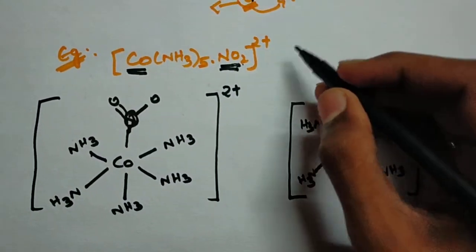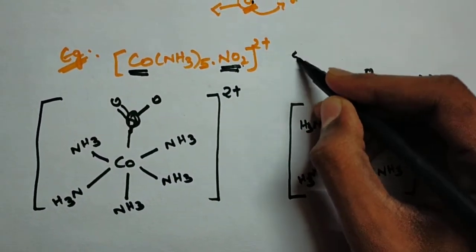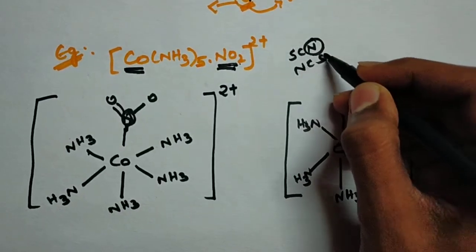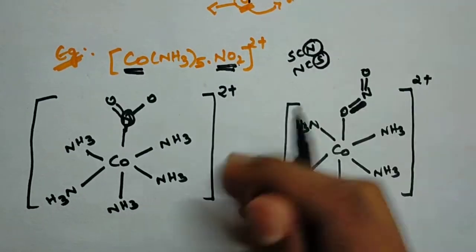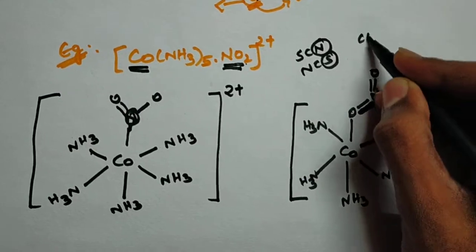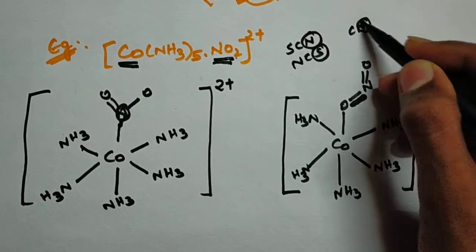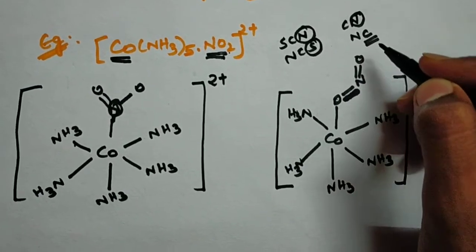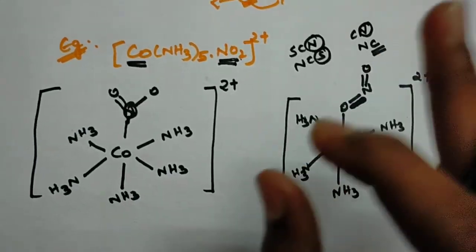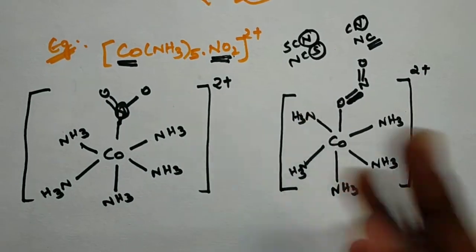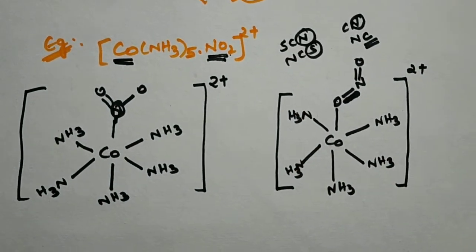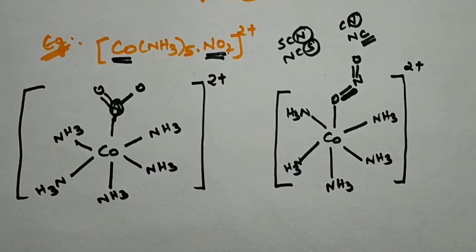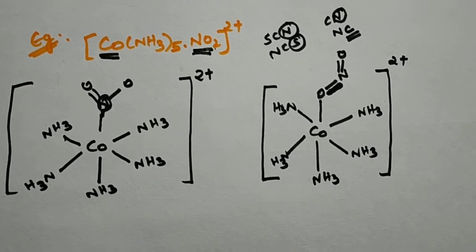Another example is SCN/NCS: one end is nitrogen and the other is sulfur. Similarly, CN/NC — cyanide bonded through carbon, and isocyanide bonded through nitrogen. When one ligand can attach through two different donor atoms, that is called an ambidentate ligand, giving linkage isomers.